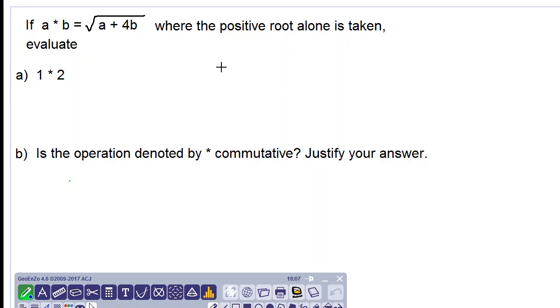Good day everyone, we are working out this binary operations question. If a star b is equal to the square root of a plus 4b, where the positive root alone is taken, evaluate 1 star 2.